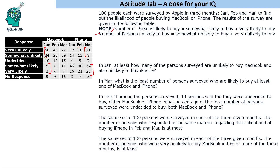The first question is: in January, at least how many of the persons surveyed are unlikely to buy MacBook and are also unlikely to buy iPhone? In January, 74 people are unlikely to buy MacBook, and for iPhone, 17 plus 14 equals 31 are unlikely to buy. These questions can be done by Venn diagram or mathematically.